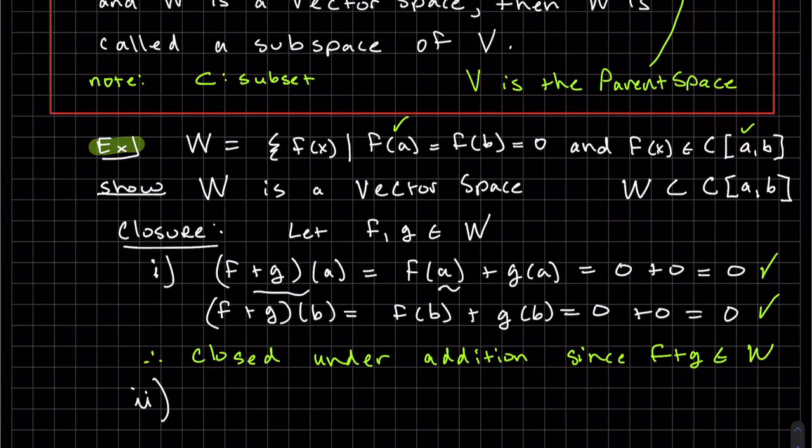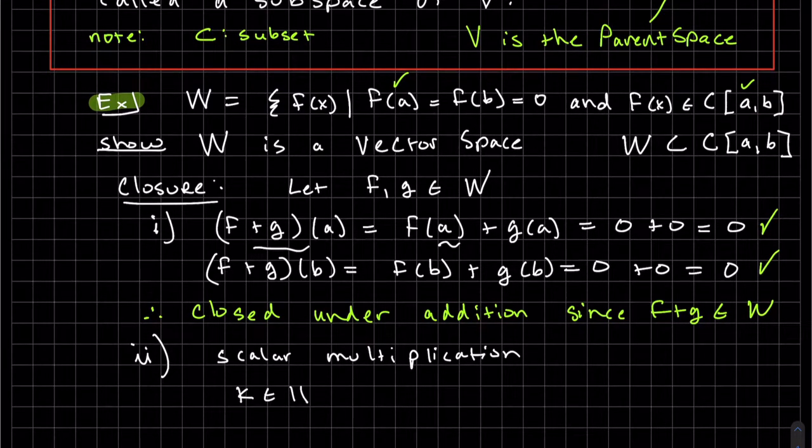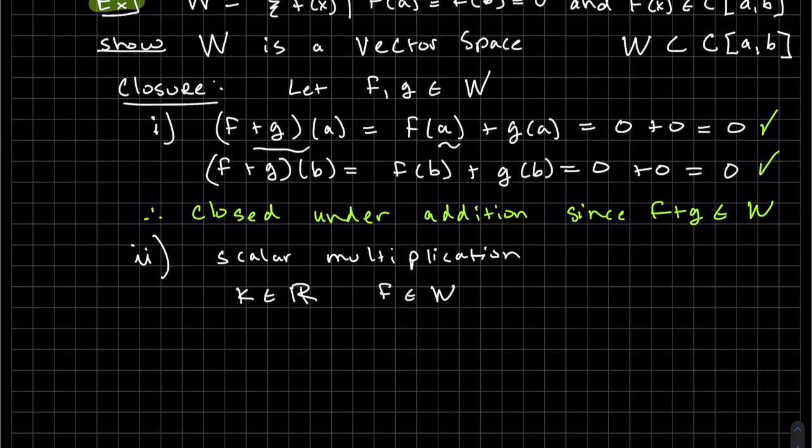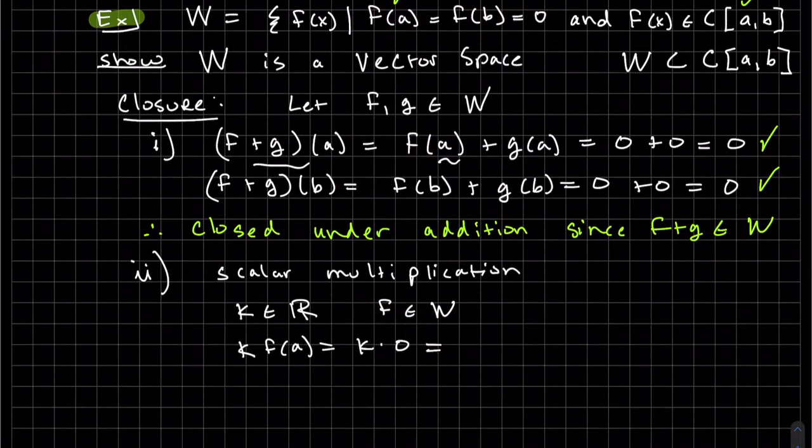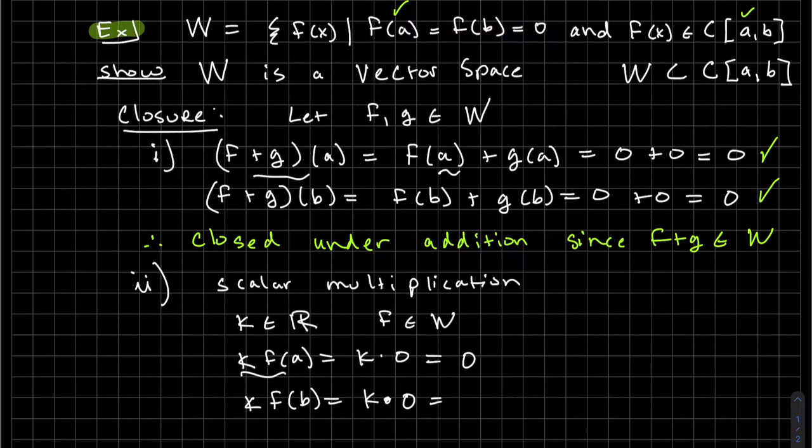The second condition of closure is scalar multiplication. We choose K to be any real number, and we'll use F of X, F in W. K times F of A is K times 0. Since F is in W, that's given. We know any constant times 0 is 0. Again, F of B is 0. Therefore, K times 0 is 0.